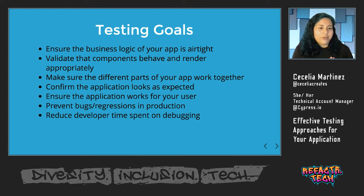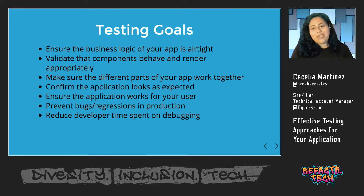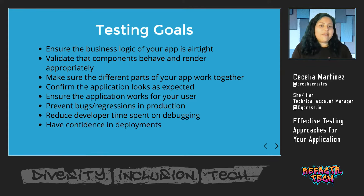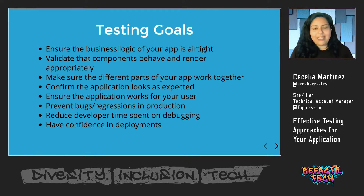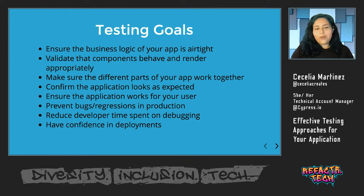And then finally, reducing developer time spent on debugging — the more bugs you have in production, the more time you have to spend understanding where they came from and how to fix them. And having confidence in your deployments: if you've made any changes to your code base, understanding that it's not going to break anything for the end user, and that you can really feel comfortable pushing that button to release.